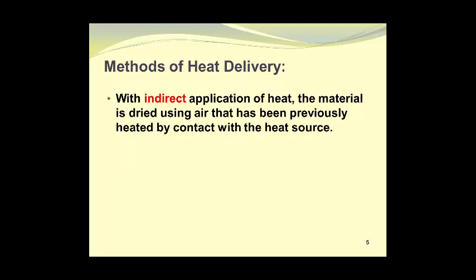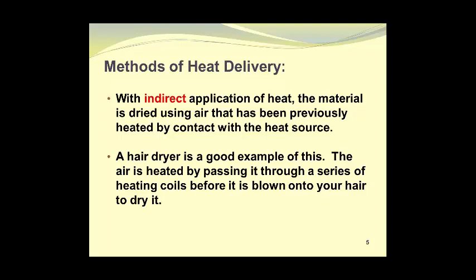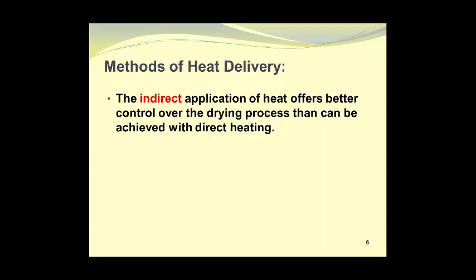With indirect application of heat, the material is dried using air that has been previously heated by contact with the heat source. A hair dryer is a good example of this. The air is heated by passing it through a series of heating coils before it is blown on your hair to dry it. Most dryers use the indirect heating method. The indirect application of heat offers better control over the drying process than can be achieved with direct heating.